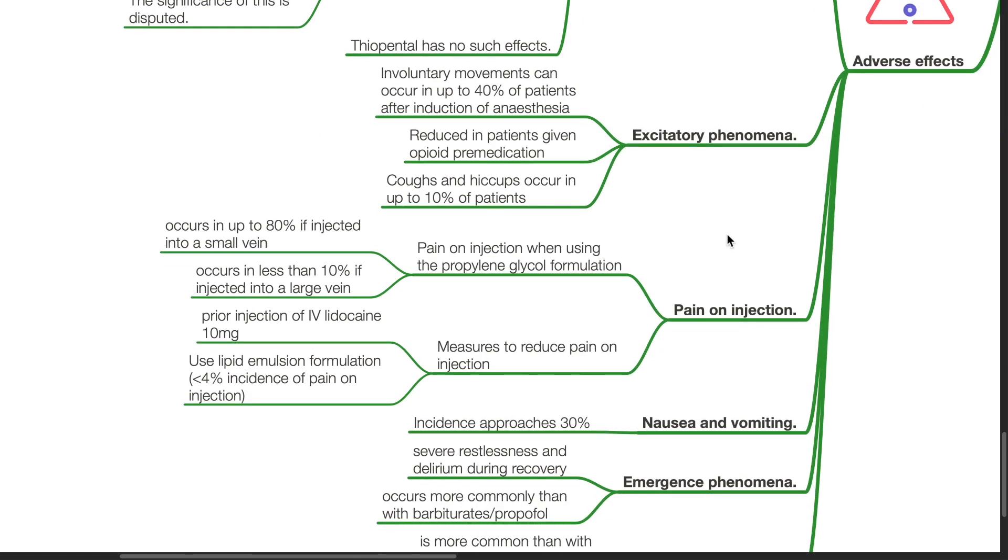Pain on injection: Pain on injection occurs when the propylene glycol formulation of etomidate is used, and the incidence is up to 80% in situations where a small vein is used, and less than 10% if injected into a large vein. To reduce the pain on injection, use a prior injection of IV lidocaine 10mg, or use lipid emulsion formulation which has less than 4% incidence of pain on injection.